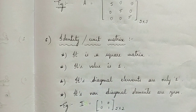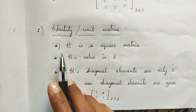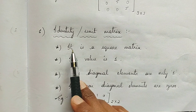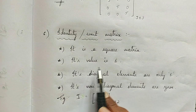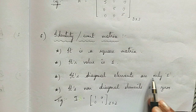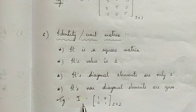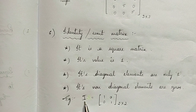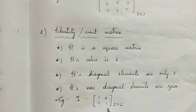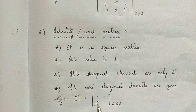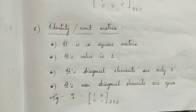What is an identity or unit matrix? It should satisfy these conditions: it is a square matrix, its diagonal elements are only 1, and its non-diagonal elements are zeros. We always represent the identity matrix using the capital letter I. The diagonal elements are always 1 and the non-diagonal elements are always zeros. This is a matrix of order 2 cross 2.